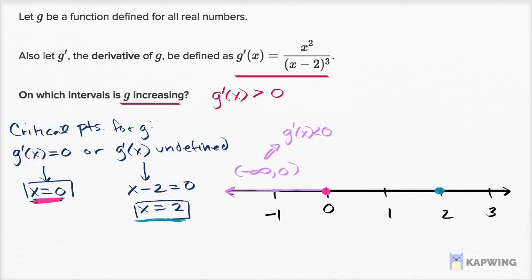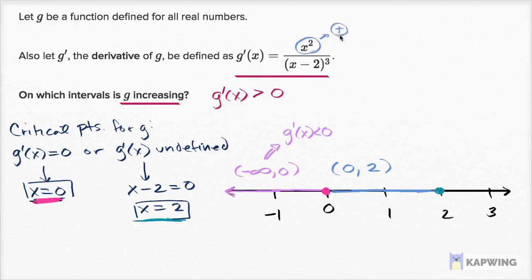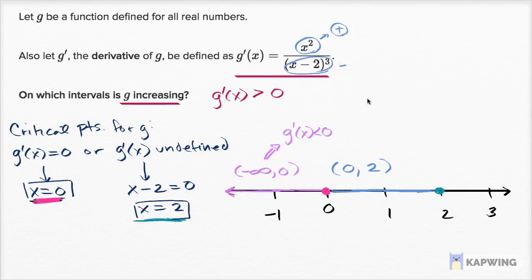Now for the interval from zero to two: x squared is still going to be positive for any x not equal to zero. And x minus 2 — with x between 0 and 2, for example x equals 1 gives 1 minus 2 equals negative 1. We still get negative values in the denominator, and a negative to the third power is still negative. So g prime is still less than zero.